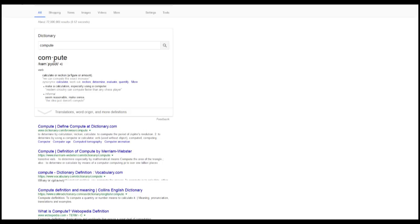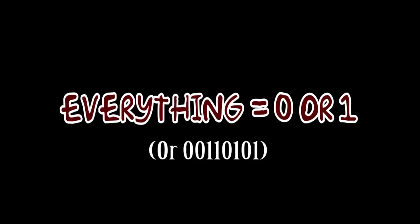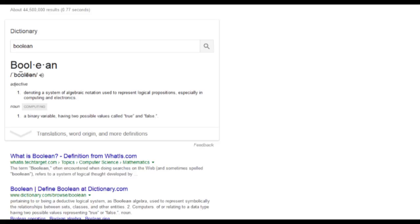In computing terms, binary code means everything is represented by a zero or a one or a series of those numbers. And we'll get back to that in a second. Many people also equate binary code with Boolean. And though they're very similar, they are not exactly the same. Boolean means having two possible values, which is very similar to binary.